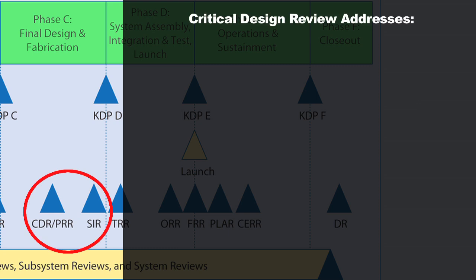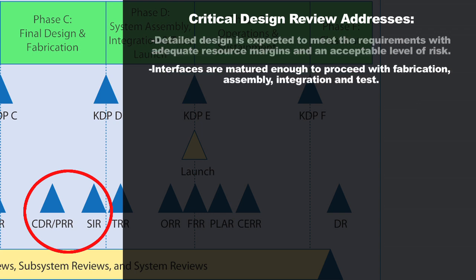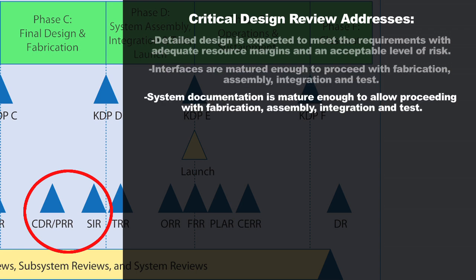At the Critical Design Review, you're going to be looking at all the detailed design work that you've done, and an external technical review team will assess whether your design is going to be able to meet the requirements laid out for it, with adequate resource margins and an acceptable level of risk. They'll look at things like the defined mass for the satellite — checking that the current design looks like it can be completed without going over the mass limit. They'll also look at interfaces and make sure they've been matured enough to proceed with fabrication, assembly, integration, and test of the system.